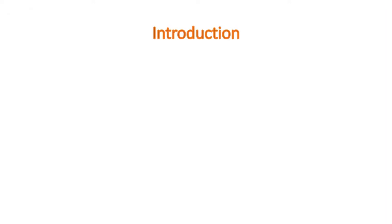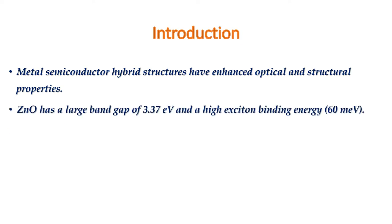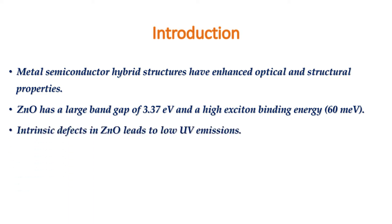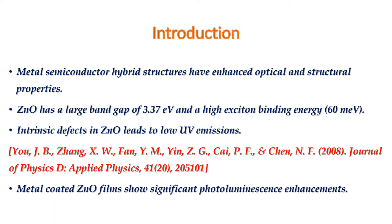Let's introduce the system. Hybrid structures of metals and semiconductors at nanoscale have enhanced structural and optical properties. These properties can be exploited for the development of electroluminescent displays, optoelectronic devices, LEDs, biosensors, UV lasers, etc. Zinc oxide, with a large band gap and a high exciton binding energy at room temperature, is a promising material for optoelectronic devices. The main disadvantage is the presence of intrinsic defects leading to low UV emissions. Significant photoluminescence enhancement of zinc oxide coated with metal nanostructures has been reported, indicating considerable potential of surface plasmon mediated emission in enhancing the emission efficiency of zinc oxide based devices.